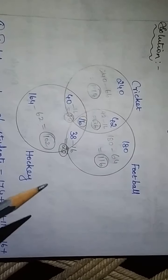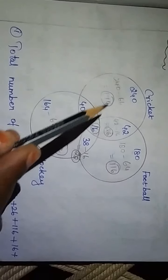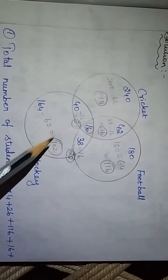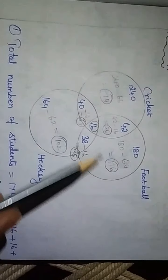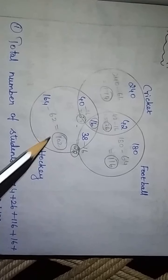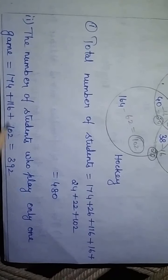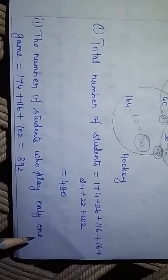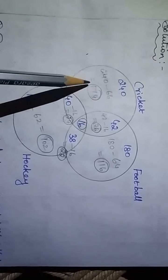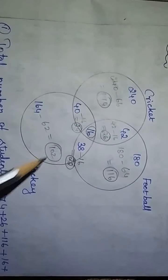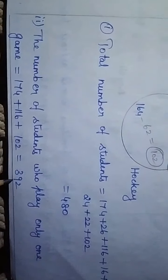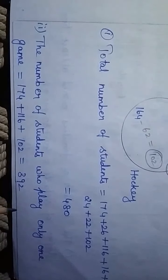So the total number of students in the college is all values added together: 174 + 26 + 116 + 16 + 24 + 22 + 102 = 480. The second answer — number of students who play only one game — is 174 (cricket only) + 116 (football only) + 102 (hockey only) = 392 students play only one game.